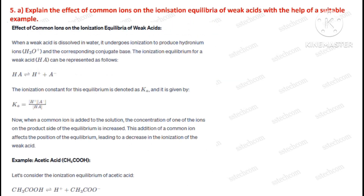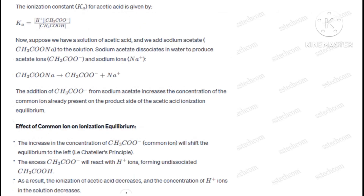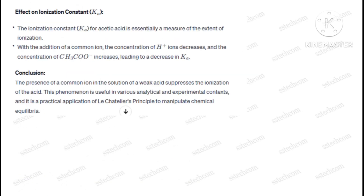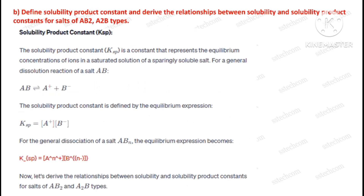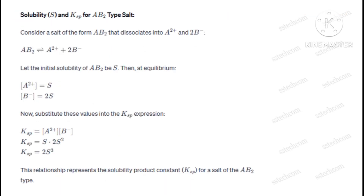Question number five, part A: Explain the effect of common ions on the ionization equilibrium of weak acids with the help of a suitable example. Part B: Define solubility product constant and derive the relationship between solubility and solubility product constant for salts of AB, A₂B, and AB₂ types.